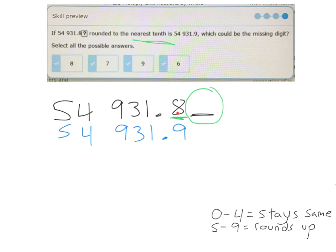every single one of those would have worked. If this was a 6, it would have made the 8 round up to 9. If this was a 9, it would have made the 8 round up to 9. Same for 7 and same for 8. So actually, every one of those is correct, or could have been a possible answer.